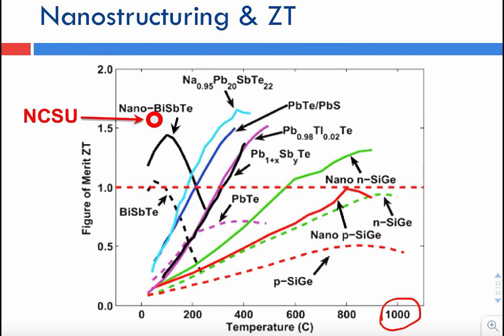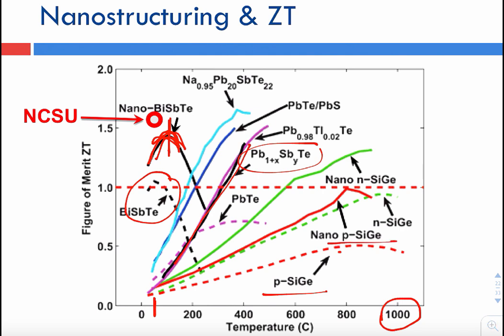Certain materials behave better in certain temperature ranges. If we are mainly interested in room temperature applications — body wearables are around room temperature, 37 degrees Celsius — we need a thermoelectric device that operates well around 50 degrees Celsius. There's really only one material that does well: bismuth antimony telluride, or bismuth telluride. It goes through a peak, so there is an optimum temperature. For higher temperature applications, lead telluride or lead antimony telluride is a good material, and at even higher temperatures, silicon germanium is a good material.